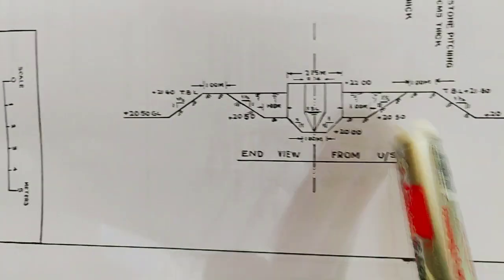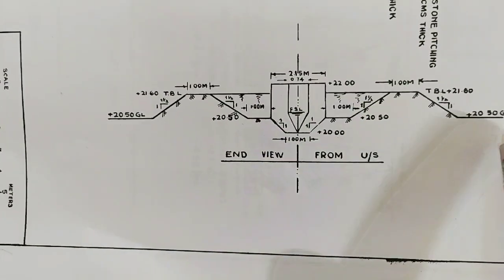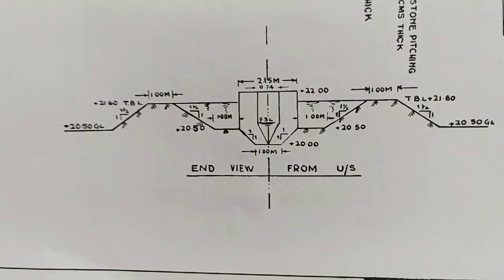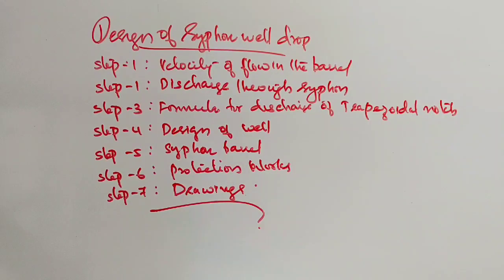Okay, 20.5, it is 22 at the top. Sill level is 20.5. Okay, design concluded.